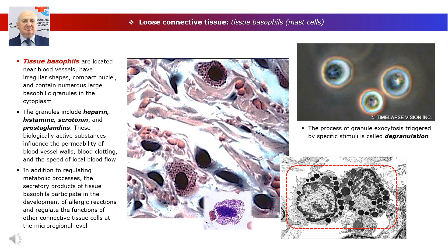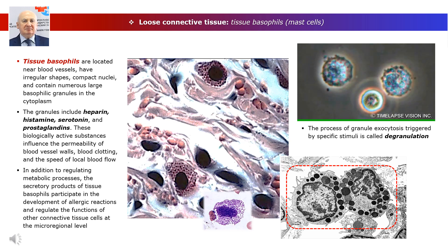These biologically active substances influence the permeability of blood vessel walls, blood clotting, and the speed of local blood flow. In addition to regulating metabolic processes, the secretory products of tissue basophils participate in the development of allergic reactions and regulate the functions of other connective tissue cells at the micro-regional level, known as paracrine regulation. The process of granule exocytosis triggered by specific stimuli — referred to as degranulation — can be clearly observed in mast cell cultures.